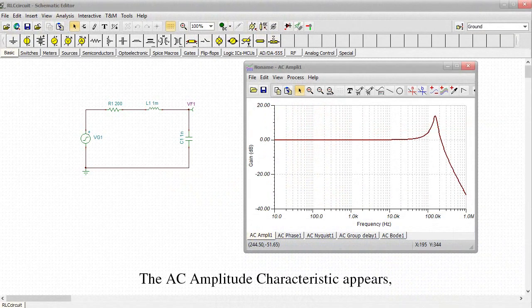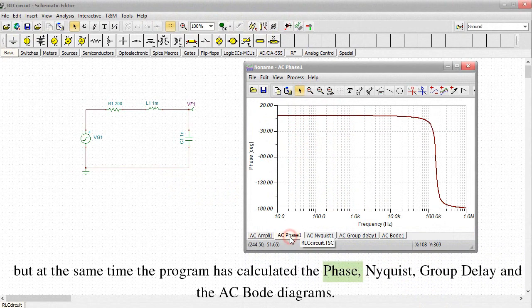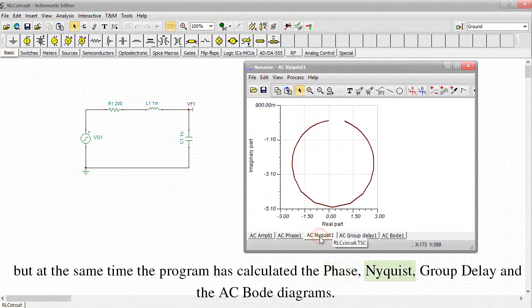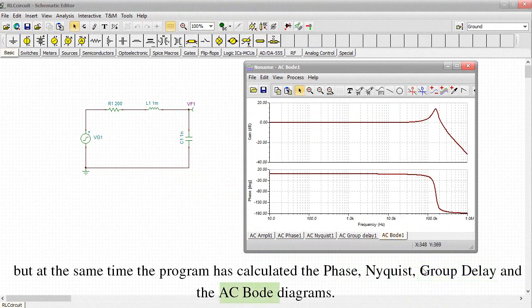The AC Amplitude Characteristic appears, but at the same time the program has calculated the Phase, Nyquist, Group Delay and AC Bode Diagrams.